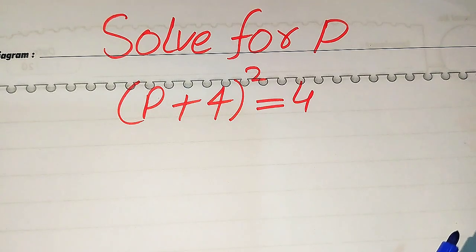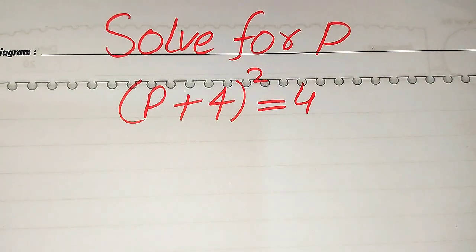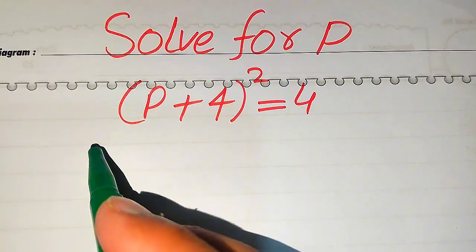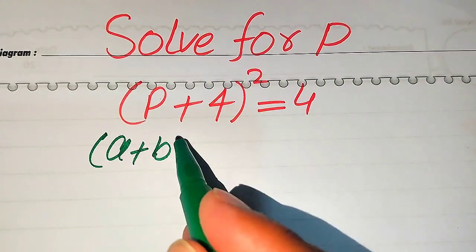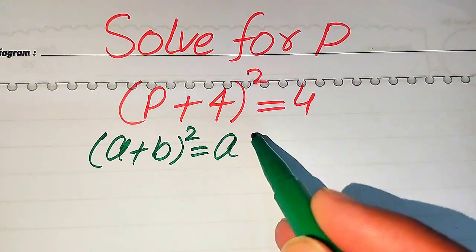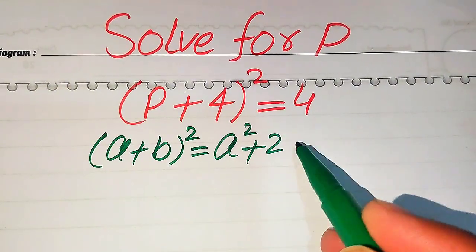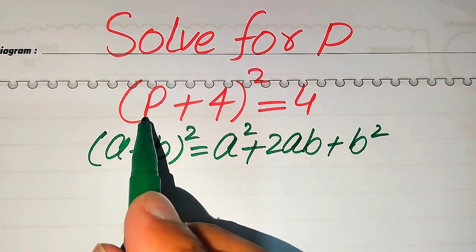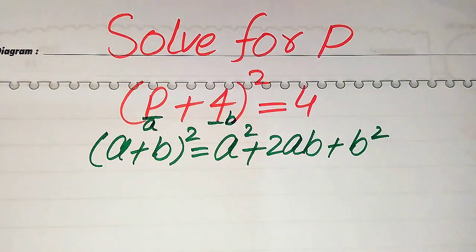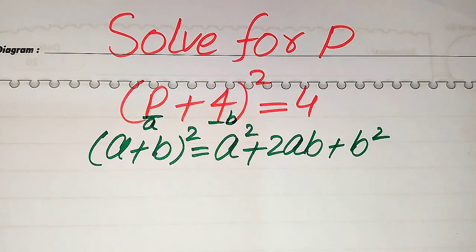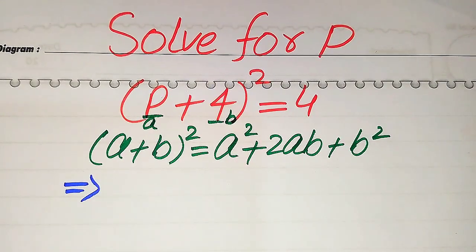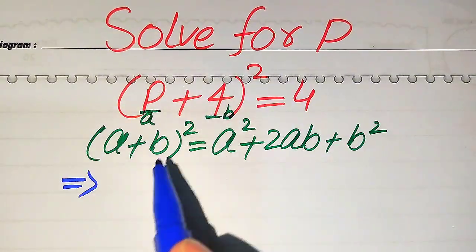We solve this problem in a very unique method. If you have any other method in mind, please write it in the comment section. We apply a nice algebraic formula to the left-hand side. The formula is: (a + b)² = a² + 2ab + b². In the left-hand side, we identify our a and b values and expand accordingly.